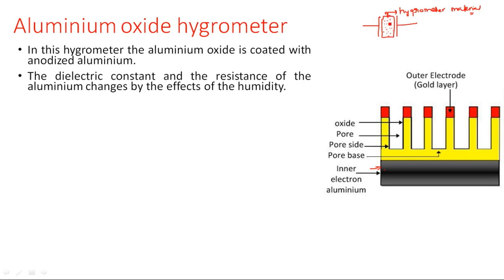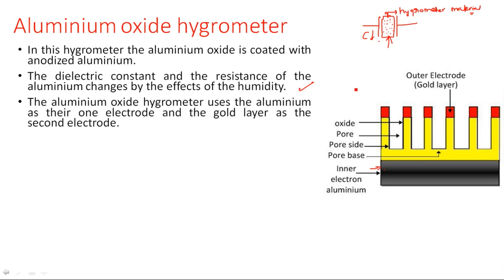The capacitance is constructed to capture the water vapor content present in the atmosphere. If this water content is absorbed by the hygrometer material, the capacitance value changes, so the resultant parameter like voltage or current will vary. The dielectric constant and resistance of the aluminum changes due to humidity. If the humidity is captured by this device, the capacitance or resistance of the device will be varied.